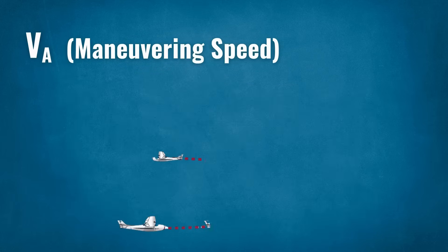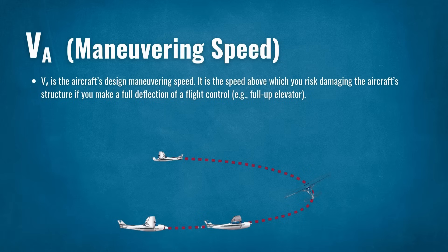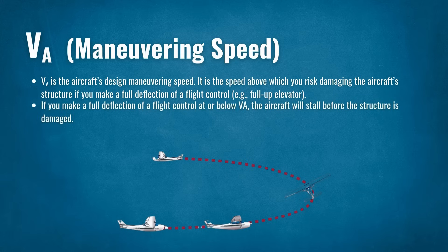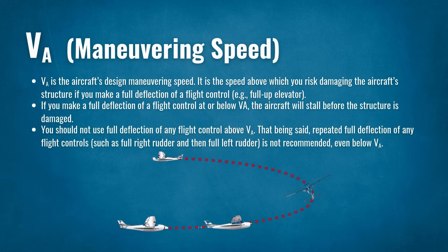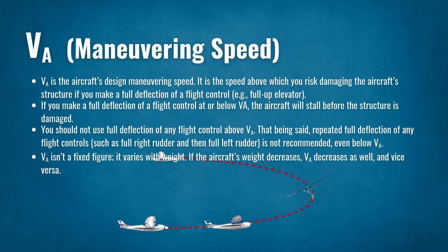VA is the aircraft's design maneuvering speed. It is the speed above which you risk damaging the aircraft's structure if you make a full deflection of a flight control. If you make a full deflection at or below VA, the aircraft will stall before the structure is damaged. You should not use full deflection of any flight control above VA. That said, repeated full deflections — such as full right rudder then full left rudder — are not recommended even below VA. VA isn't a fixed figure; it varies with weight. If the aircraft's weight decreases, VA decreases as well, and vice versa.